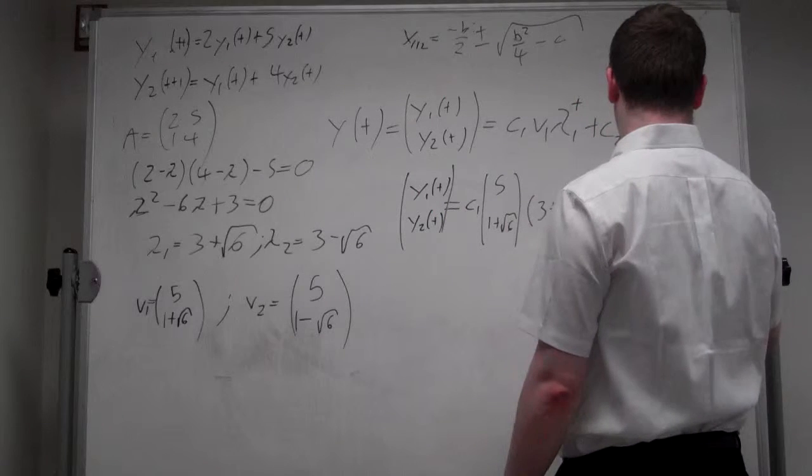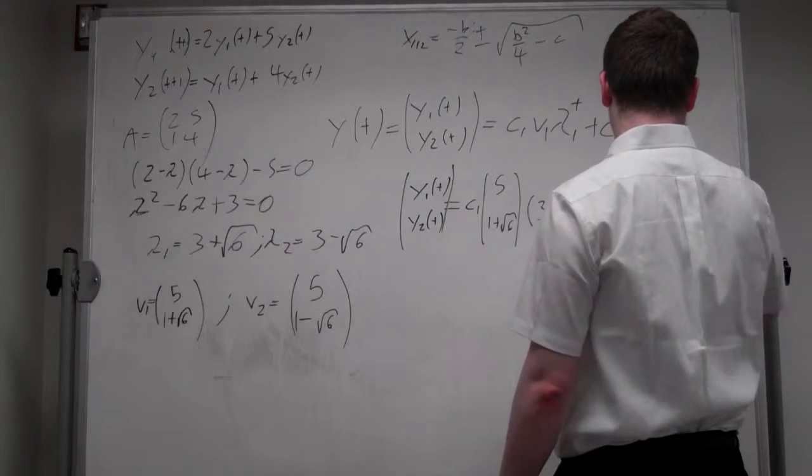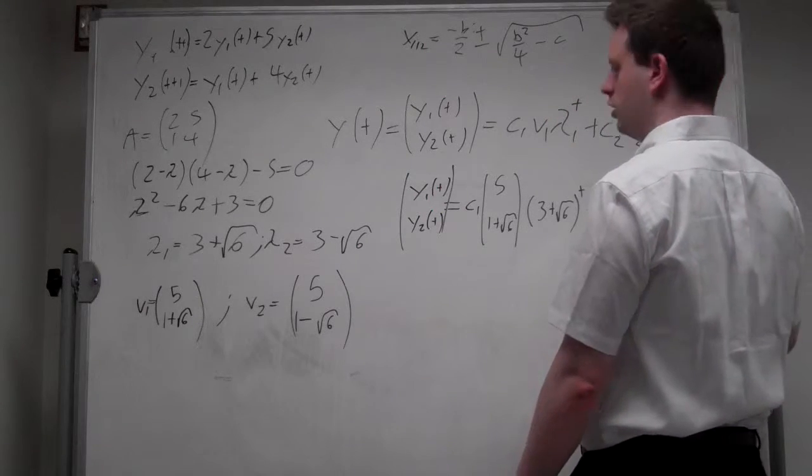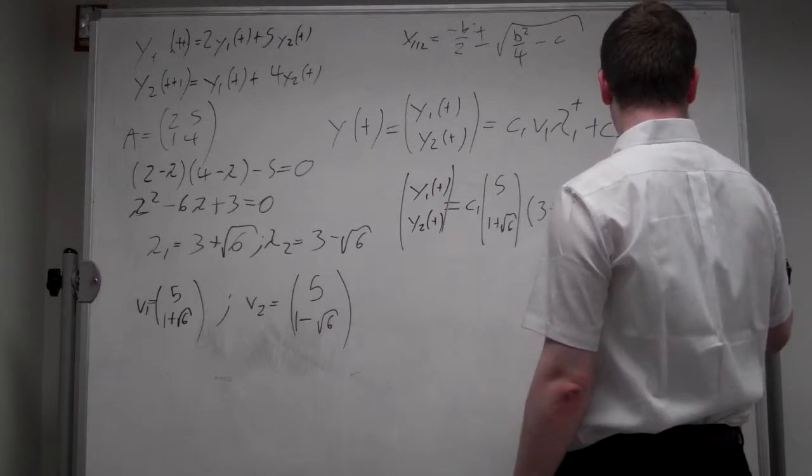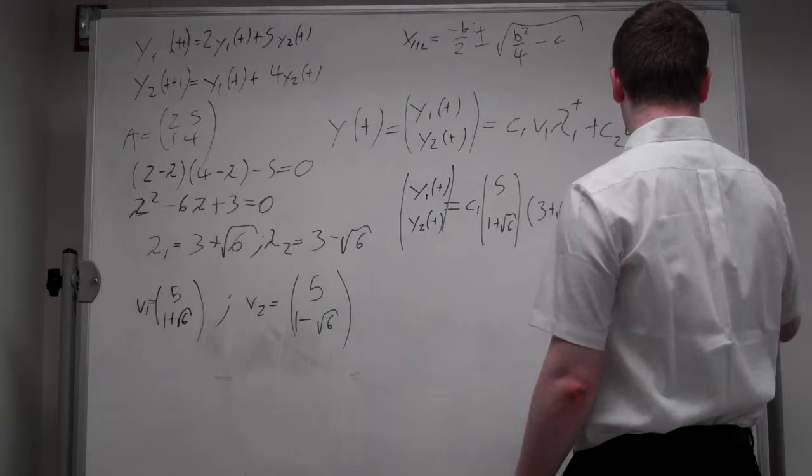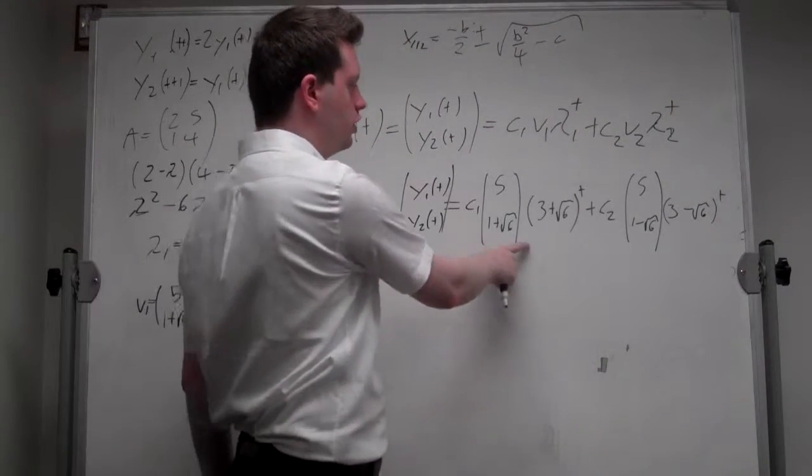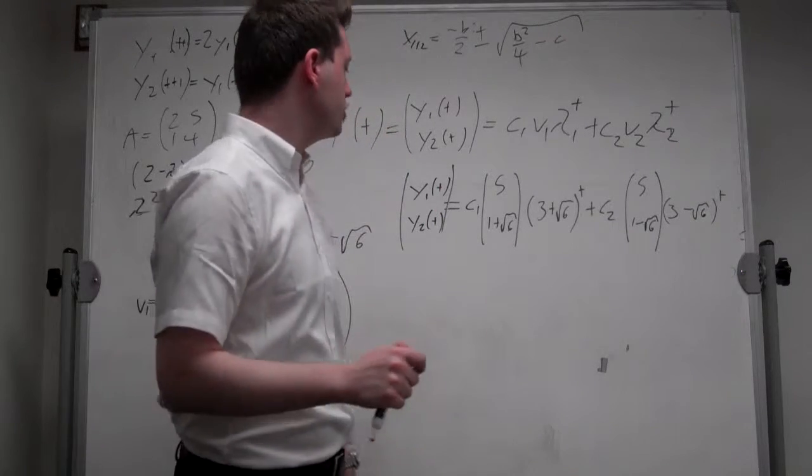plus c_2, 5, 1 minus square root of 6. And we have here lambda_2, which was 3 minus square root of 6 to the t. And this is our final solution, unless we get two initial conditions.